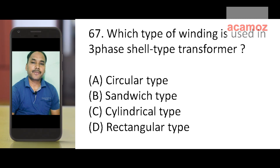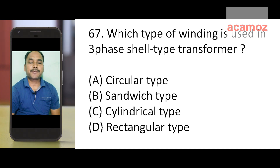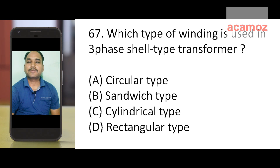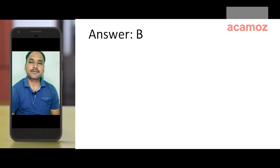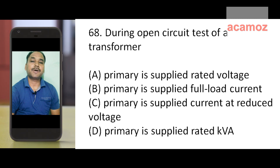Next question: which type of winding is used in a three-phase shell type transformer? Options are circular type, sandwich type, cylindrical type, and rectangular type. Three-phase shell type transformers generally use sandwich type winding, so option B is the correct answer.